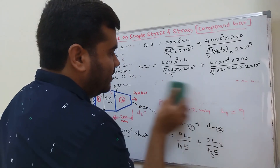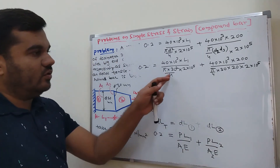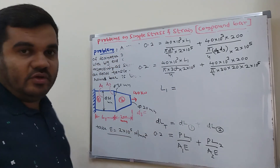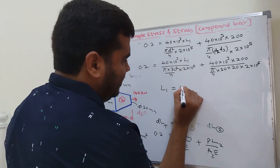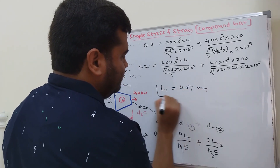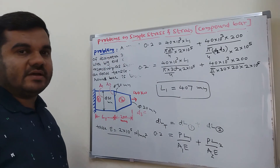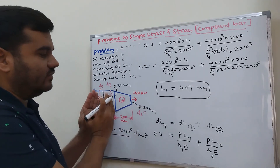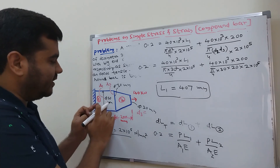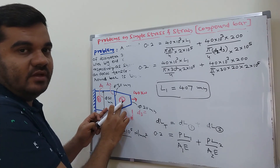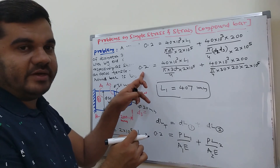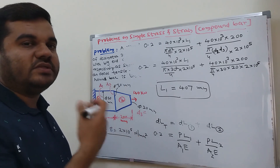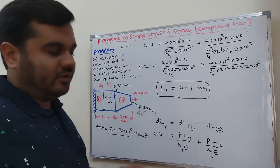After calculation, the length of the uniform bar L1 = 407 mm. The concept is: depending on the data given, first apply total deformation equals deformation of first bar plus deformation of second bar. The total deformation is given as 0.2 mm; substitute the appropriate formulas for each section and solve for the unknown.